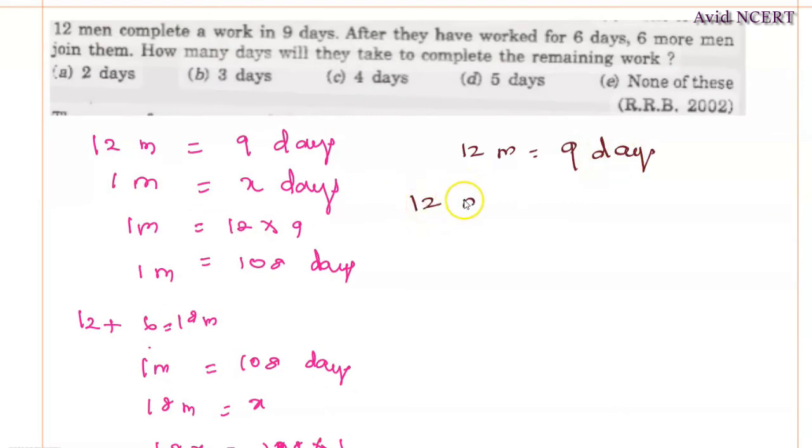Now, 12 men complete a work in 9 days, so 12 men's 1 day work equals 1 by 9, the inverse of this. They worked for 6 days, which equals 1 by 9 times 6.